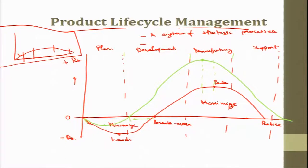Using PLM, speed to market improves — the product reaches market earlier. Productivity is boosted because the slope of the profit curve is steeper. There is an increase in revenue because the peak is reached earlier. Additionally, the extended return period means the retirement of the product happens at a later stage. This is what Product Life Cycle Management achieves — managing the complete life of a product from idea generation to its final retirement.